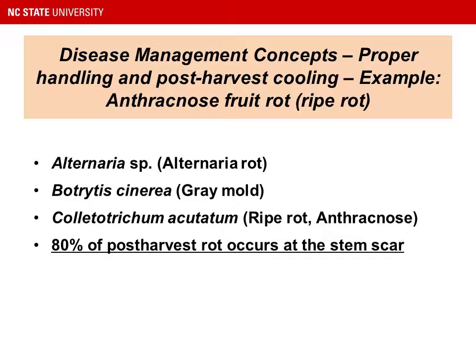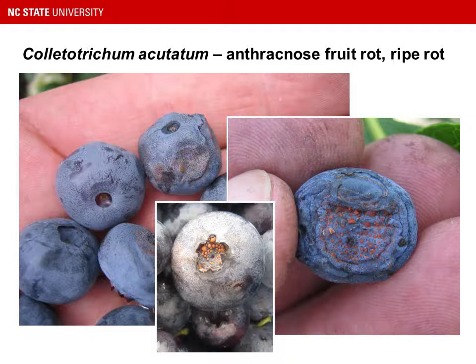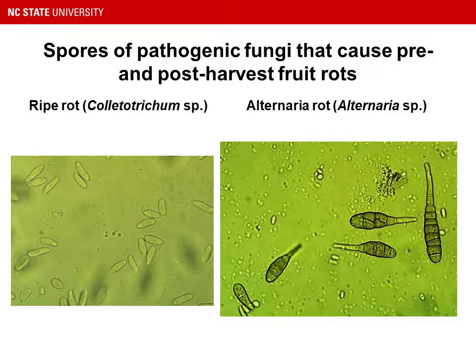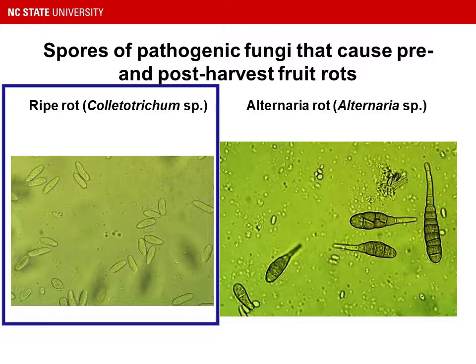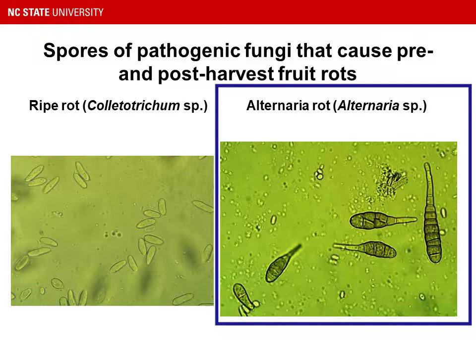The way you manage this is by picking the berries when they're dry and by cooling them as quickly as possible. Anthracnose fruit rot of blueberry results in soft, leaky berries, often with orange spore masses on the surface of the fruit. Fruit rot pathogens can be identified by the spore shape and size. These are microscopic images of the spores of ripe rot on the left and Alternaria rot on the right. Ripe rot has a characteristic spore shaped sort of like a rice grain; Alternaria is a multi-celled, club-shaped spore. They're very distinct and you can distinguish the different pathogens based on what the spores look like.